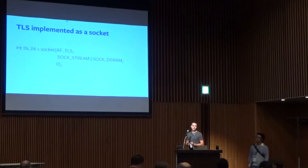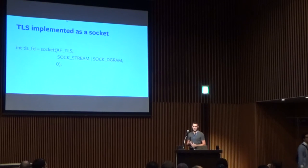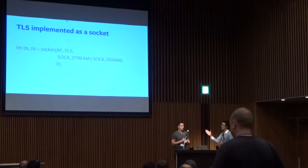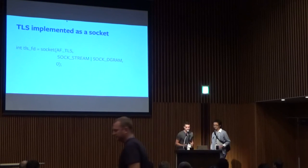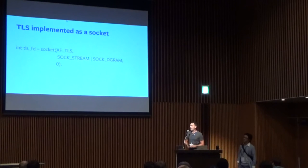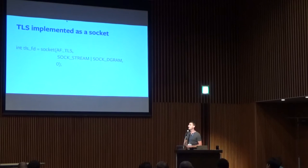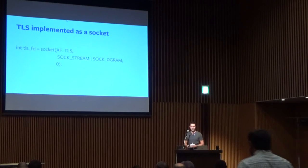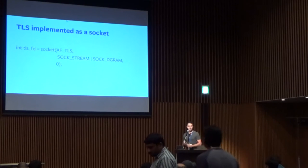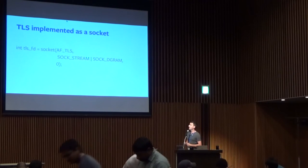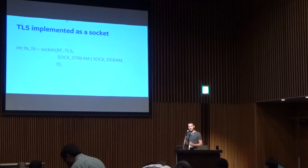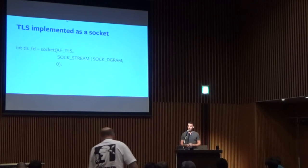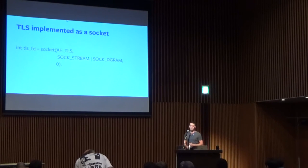We'll talk about a kernel TLS socket implementation, TLS being Transport Layer Security. From a high level, we're just making a new socket type, and you'll either instantiate it as a stream socket, so TLS, or a datagram socket, and you'll get DTLS. We've implemented this at Facebook, and we're going to talk about our experiences, how well it worked, and some of our results from running it in production.